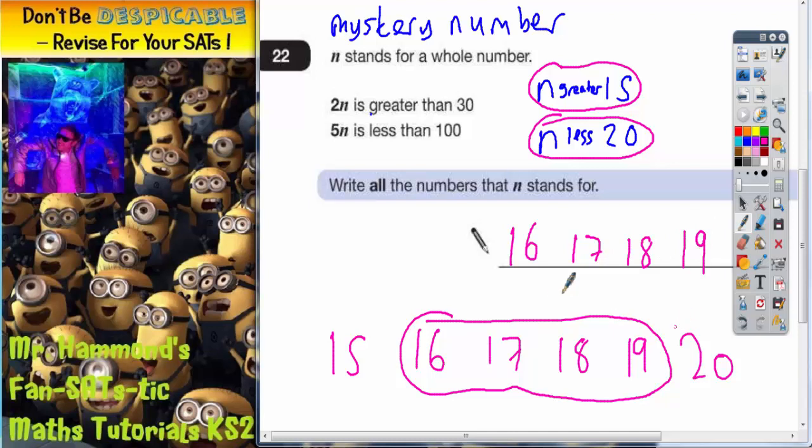And if you double check each statement, 2 of these must be greater than 30. So 2×16 would actually be 32, 2×17 is 34, 2×18 is 36, and 2×19 is 38. So that all works out, and 5 of those numbers must be less than 100.